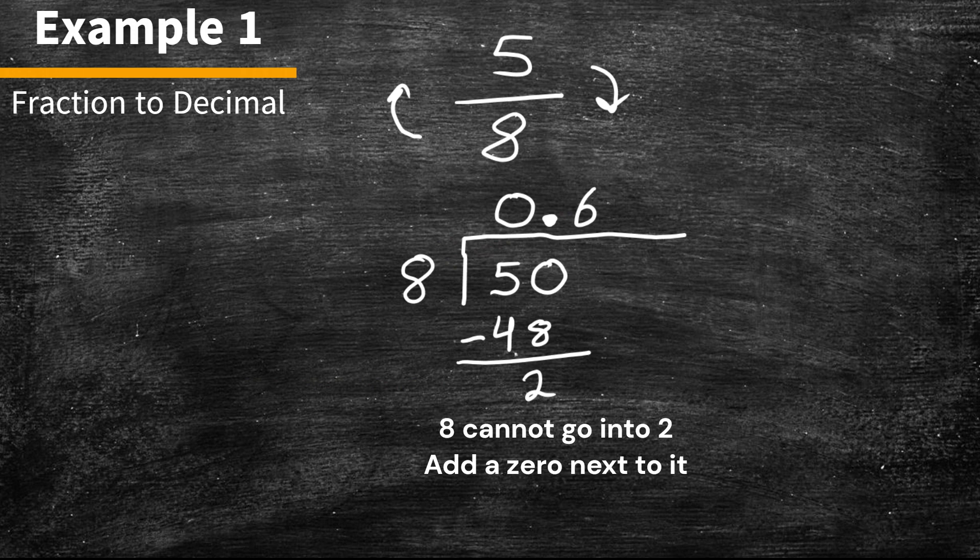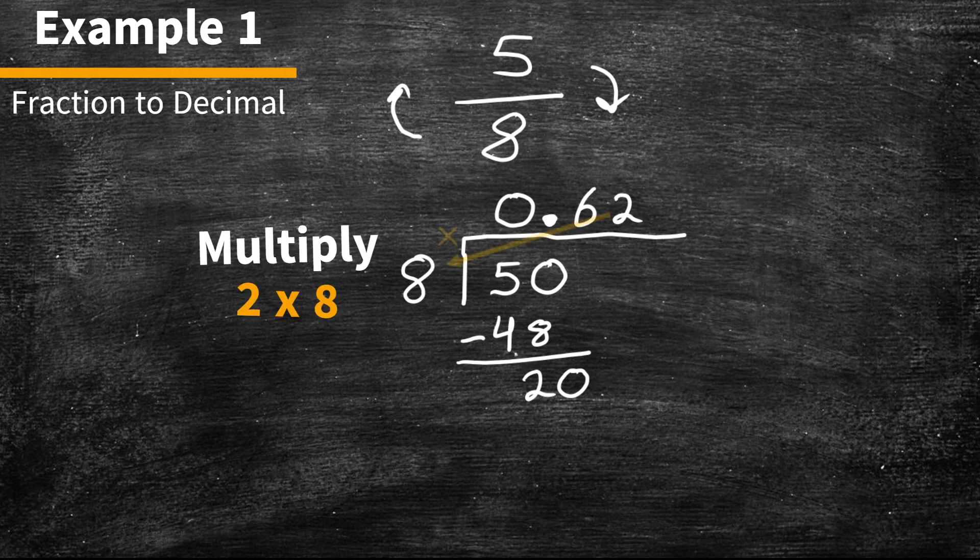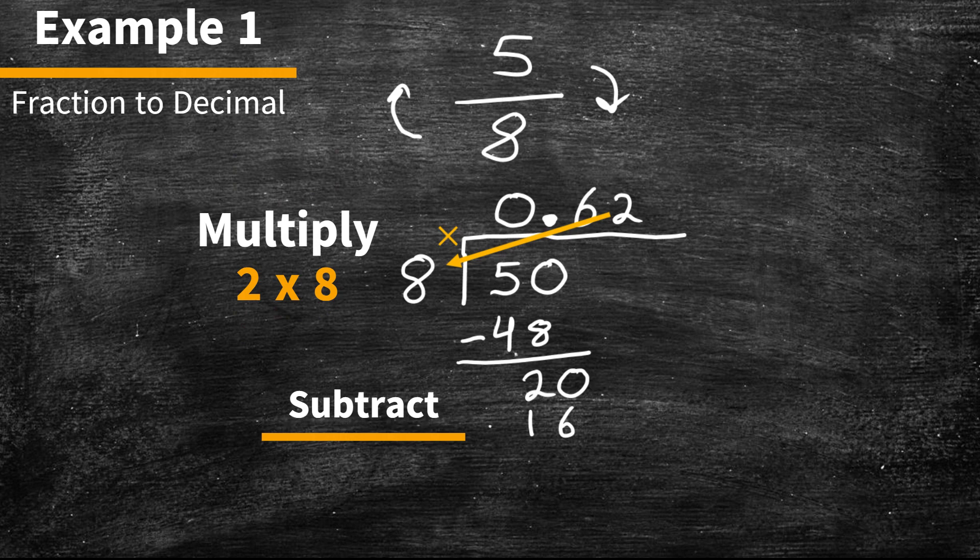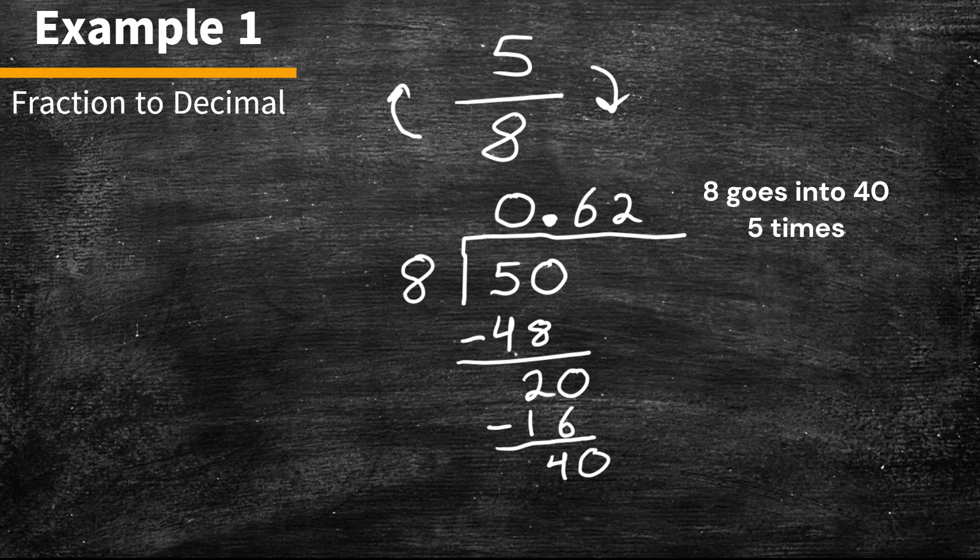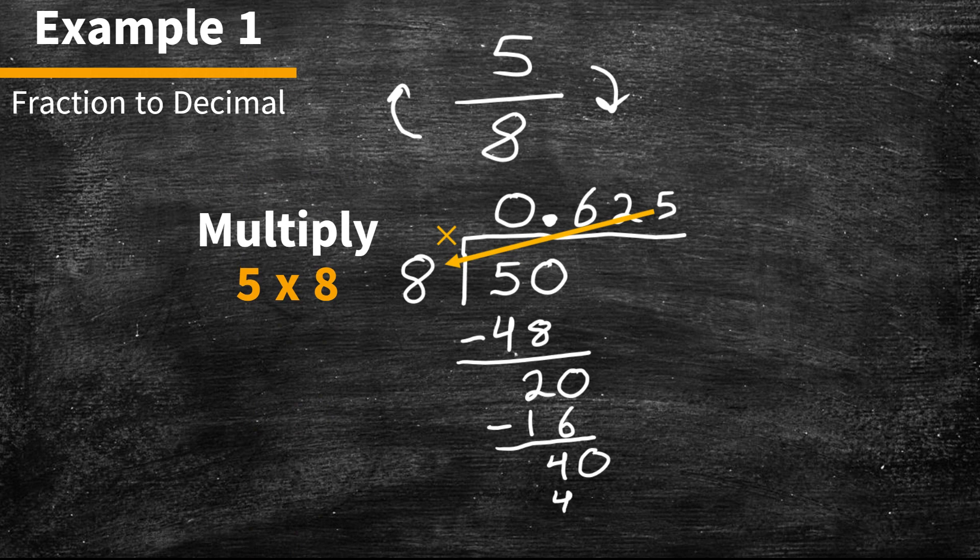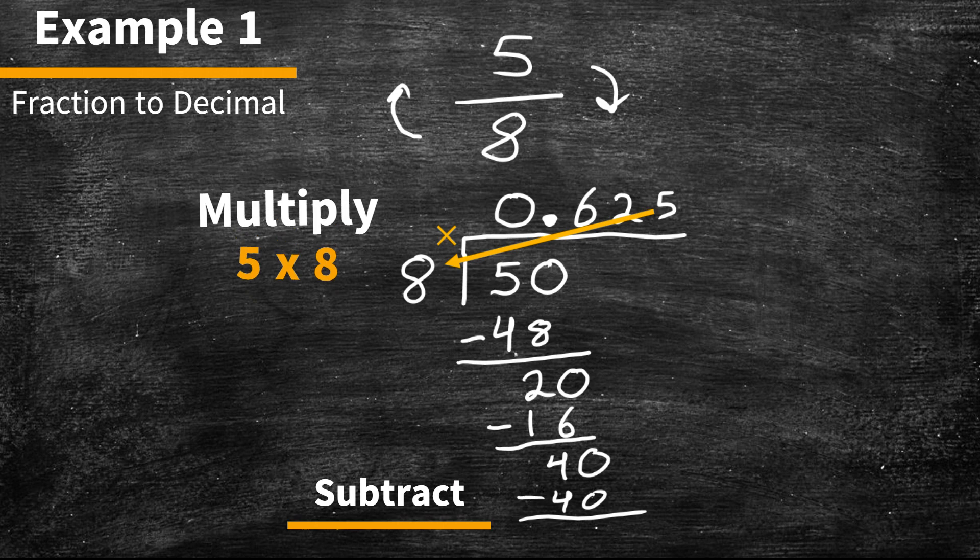Since 8 cannot go into 2, we add a 0 next to it. 8 goes into 20 2 times. 2 times 8 is 16. And we're going to subtract that 16 from the 20. That will give us 4. 8 cannot go into 4, so we add a 0 next to it. 8 goes into 40 5 times. 5 times 8 is 40. So now we subtract.